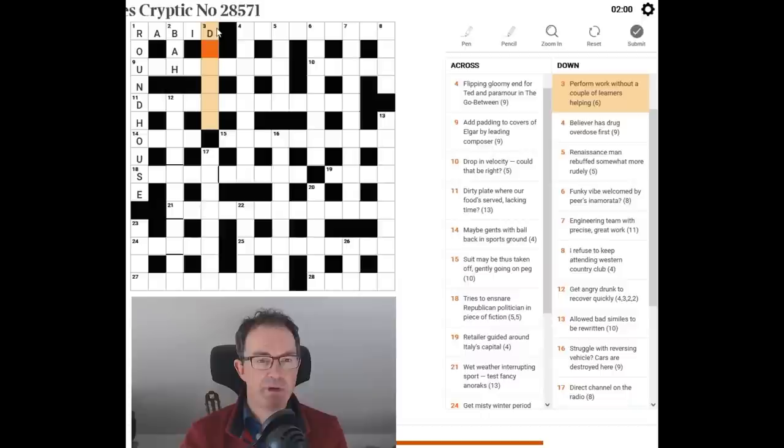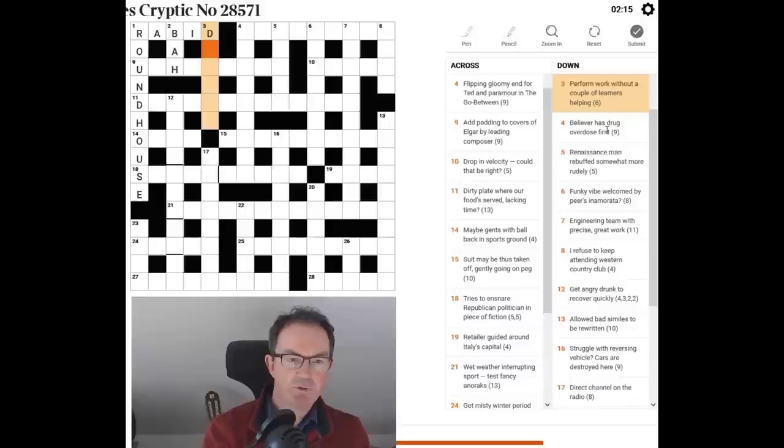So that feels right. So three down. Perform. I'm immediately thinking do. If you perform an act you do it. So I'm thinking three down might begin with do. Work could be op as for opus. Helping. Dollop. Yeah it is just dollop isn't it?